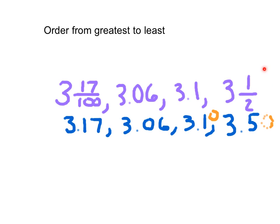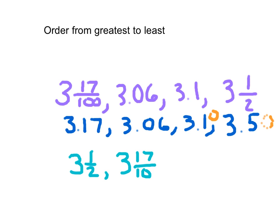Remember we have to write it in that same form. It was given to us as a mixed number, so we will write it back as a mixed number. For the next number, if we look at 3.17 versus 3.10 in the tenths place they're the same, so we compare the hundredths: 7 compared with 0. 7 is bigger, so we write 3 and 17 hundredths. The next number was 3 and 1 tenth, and in this case we can't write that extra 0 in there because originally it was given to us as 3.1.